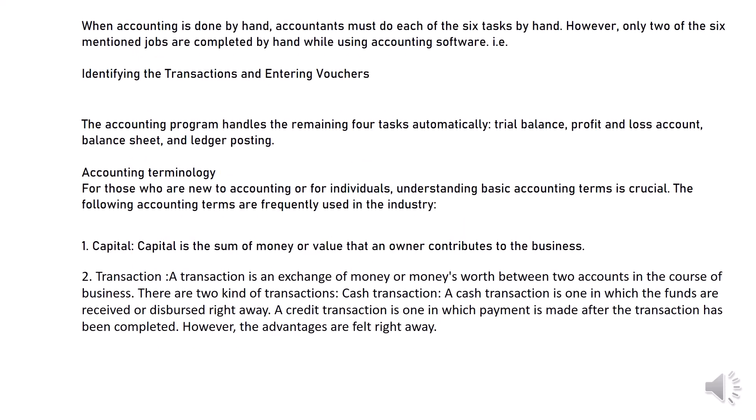When accounting is done by hand, accountants must do each of the six tasks by hand. However, only two of the six mentioned jobs are completed by hand while using accounting software — identifying the transactions and entering vouchers. The accounting program handles the remaining four tasks automatically: trial balance, profit and loss account, balance sheet, and ledger posting.